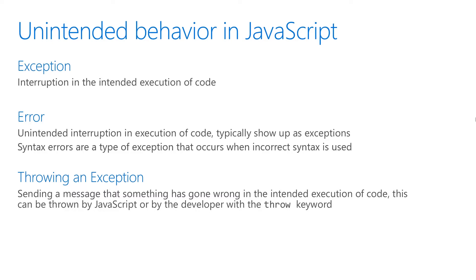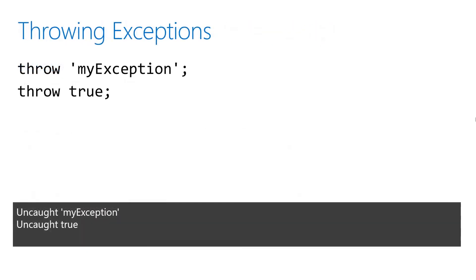Exceptions can be thrown by JavaScript or manually by the developer. This example shows two exceptions being thrown manually. When you throw an exception, you can send some additional information along with it. This can be anything from a primitive data type, all the way to a complex object — it's really up to you. This exception is throwing a string and a Boolean.